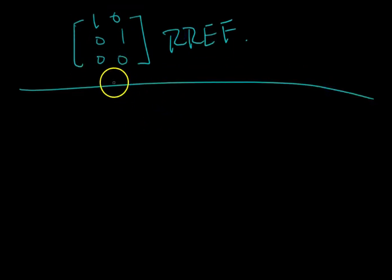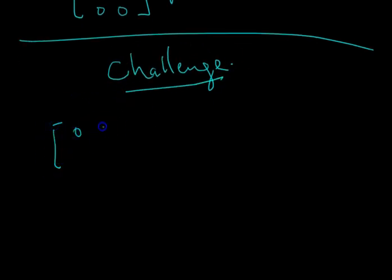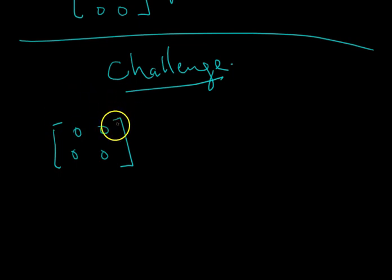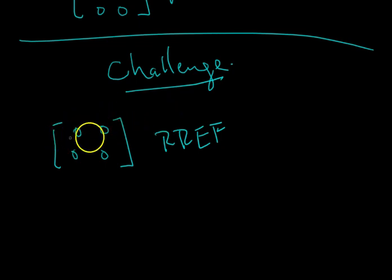Now let's do some challenge problems. We're given a two-by-two zero matrix. Is it in row echelon form or reduced row echelon form? Go through each criteria — it's a bit hand-wavy, but it does meet all of the criteria for reduced row echelon form. Do the pivots go top-left to bottom-right? There aren't any pivots, so yes. All criteria involving pivots are satisfied because there are no pivots. And the rows of all zeros are as far to the bottom as they can be because everything is a row of all zeros. So the zero matrix is in reduced row echelon form.